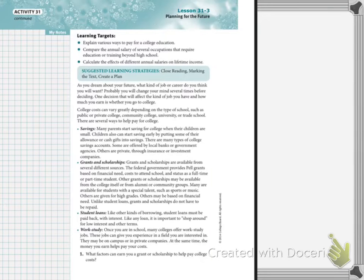So we talked about credit cards and credit scores. Today we're going to talk about how we can pay for a higher education and what having a higher education does when we are earning money. As you dream about your future, what kind of job or career do you think you want? Probably you'll change your mind several times before deciding. One decision that will affect the kind of job you have and how much you earn is whether you go to college.